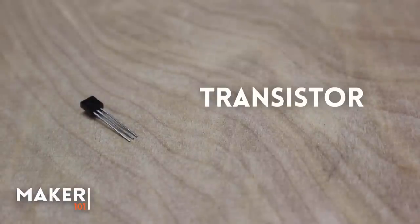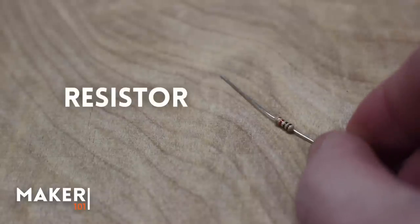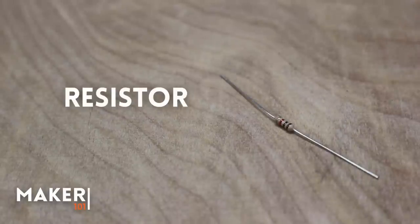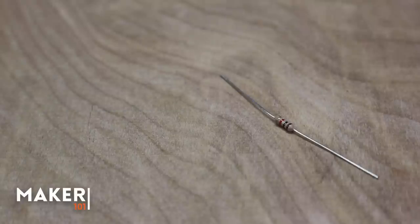This is a transistor. It's a three-terminal component, and it's usually used to amplify a signal, but it can also be used as a switch. This is a resistor. It causes resistance to the flow of electricity. You can tell the amount of resistance by decoding the colored bands on each one.